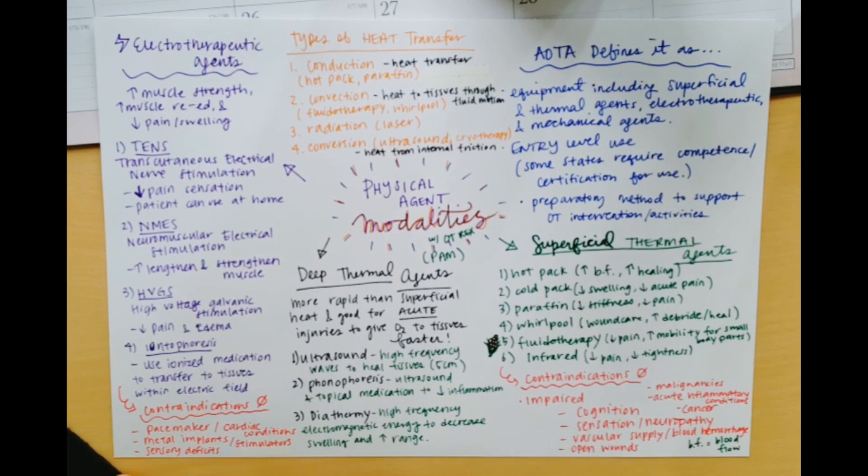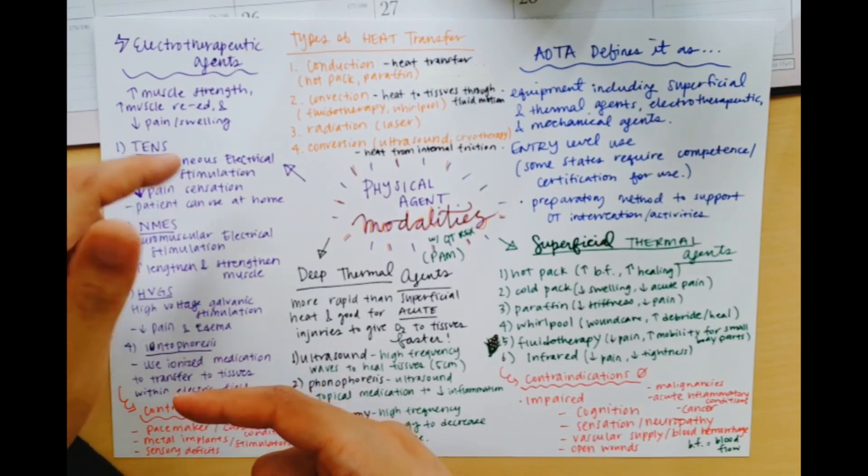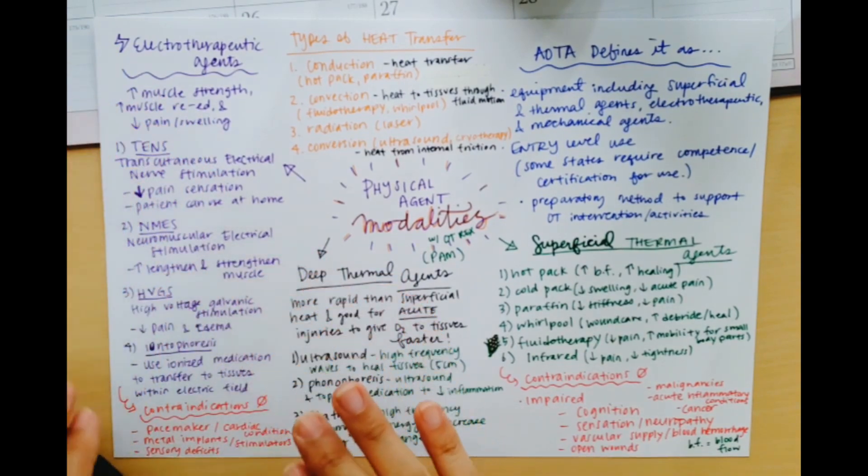The overall contraindications here will be similar to the thermal agents but we just need to make sure that we avoid any problems that have to do with the transfer of electricity involved. So pacemakers and cardiac conditions, metal implants as well as stimulators and sensory deficits are all contraindications for electrotherapeutic agents.